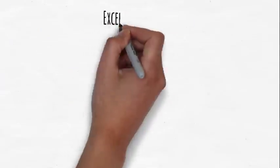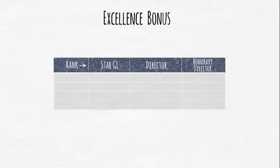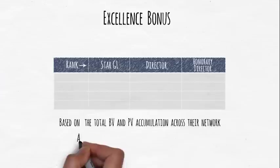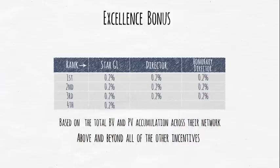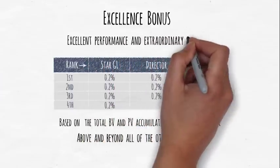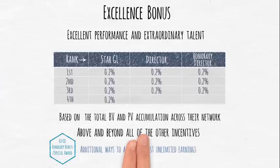Finally, the Excellence bonus is that which is paid to the highest ranks and is based on the total BV and PV accumulation across their network. It's above and beyond all of the other incentives and is paid at a standard 0.2% each month. It's the company's way of acknowledging excellent performance and extraordinary talent. We have already touched on the honorary bonus schemes involving profit sharing and special awards, and these give us additional ways to achieve almost unlimited earnings.